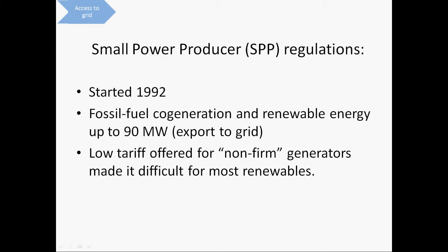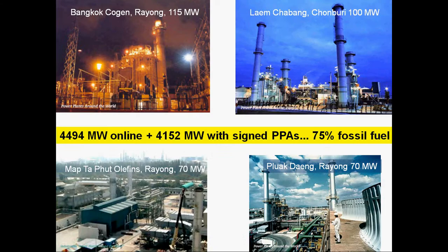The SPP program did lead to a lot of cogeneration, especially in industrial estates, petrochemical factories, and so forth. Here are some photos of some of these. They mostly generate electricity and sell steam to industry.